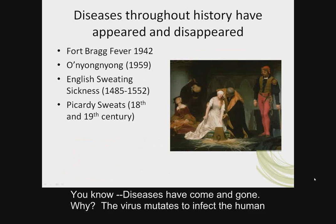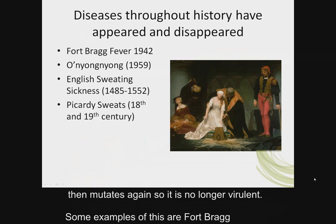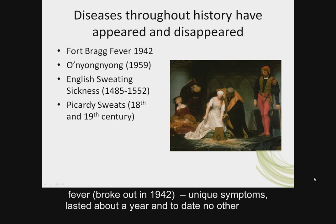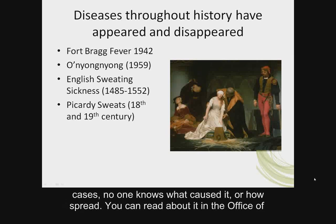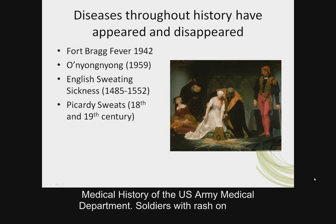Diseases have come and gone. Why? The virus or bacterium mutates to infect the human, and then mutates again so it is no longer virulent. Some examples include the Fort Bragg fever, which broke out in 1942 with unique symptoms, lasted about a year, and to date no other cases have occurred. No one knows what caused it or how it spread. Soldiers presented with a funny rash on their shins.